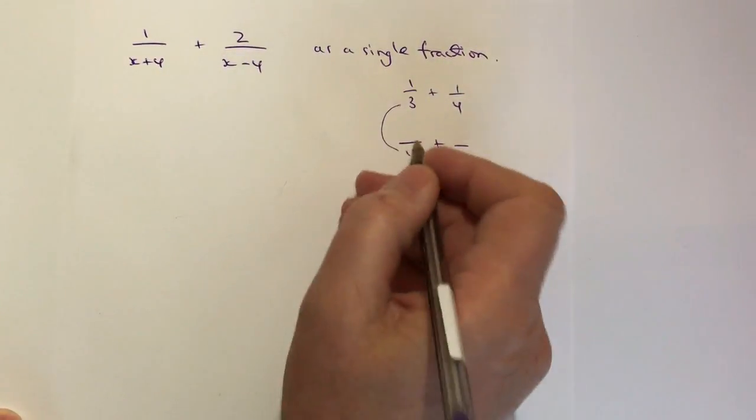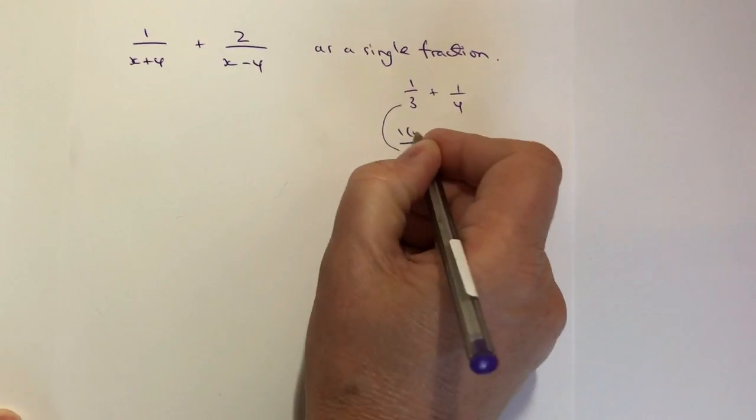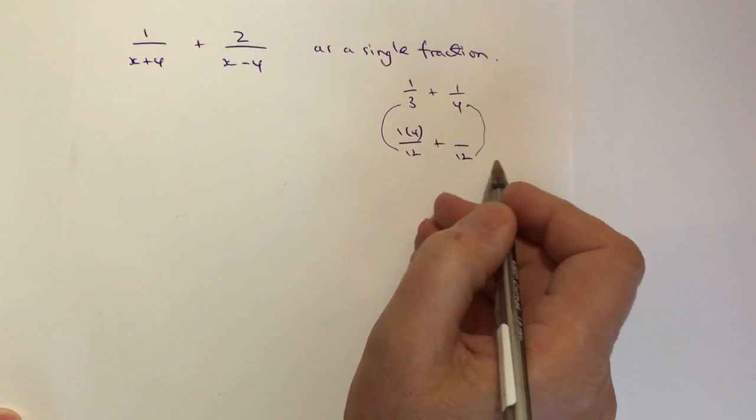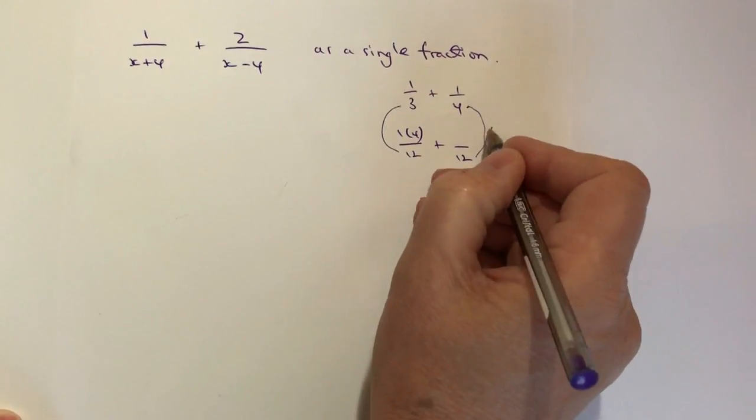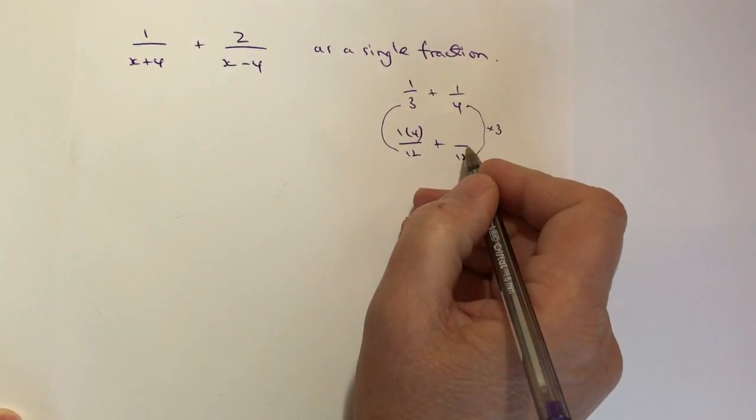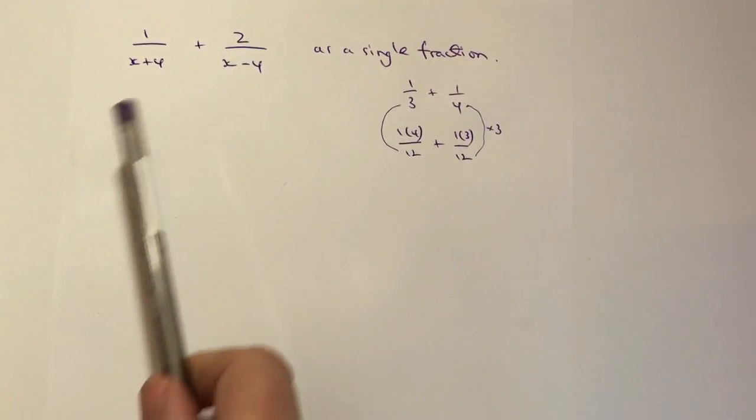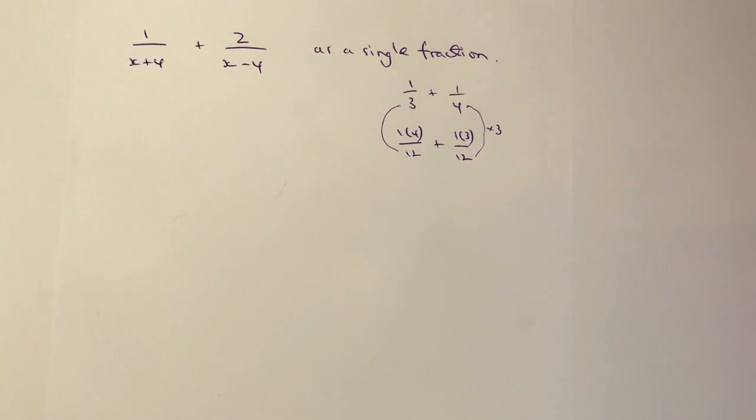I multiply it by 4 so I multiply the top by 4 and then with the other fraction I've multiplied that by 3 so I multiply the top also by 3 and that's what we're going to do with this particular type of algebraic fraction.